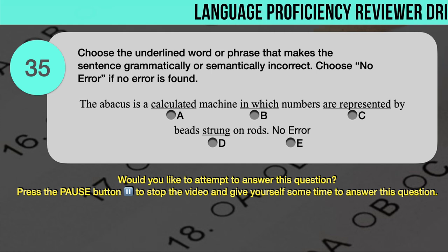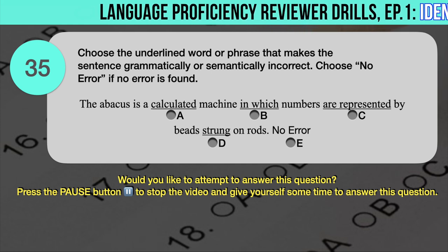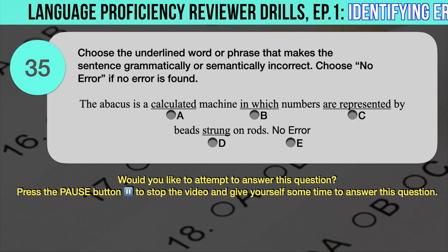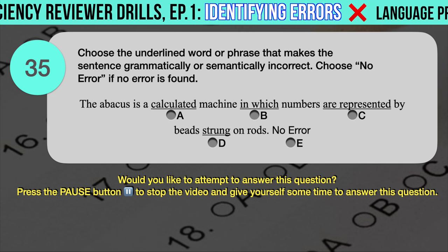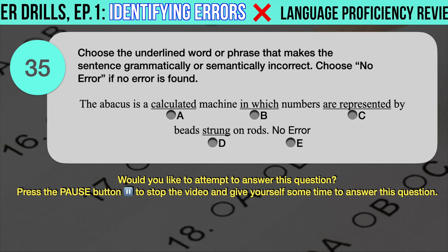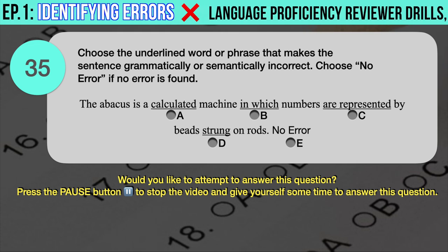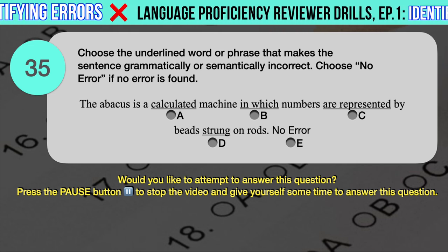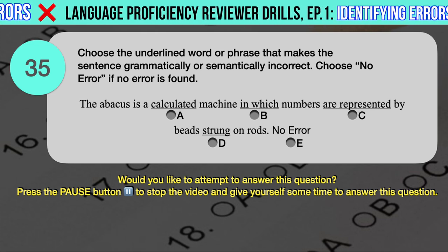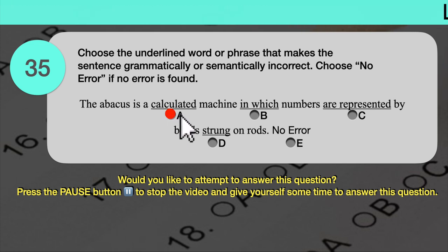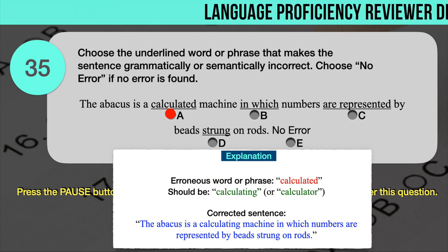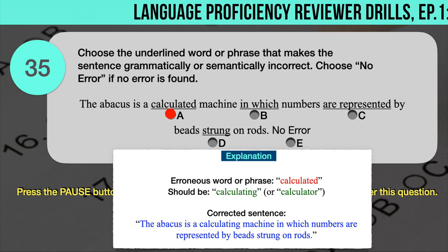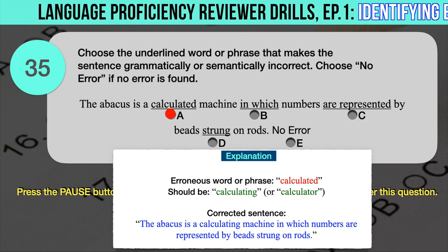Drill question number 35. 'The abacus is a calculated machine in which numbers are represented by beads strung on rods.' The underlined words are: A. Calculated, B. In which, C. Are represented, D. Strung. The correct answer is A. 'Calculated' should have been 'calculating' or possibly 'calculator' to correctly modify the noun 'machine.' Correct sentence: The abacus is a calculating machine in which numbers are represented by beads strung on rods.